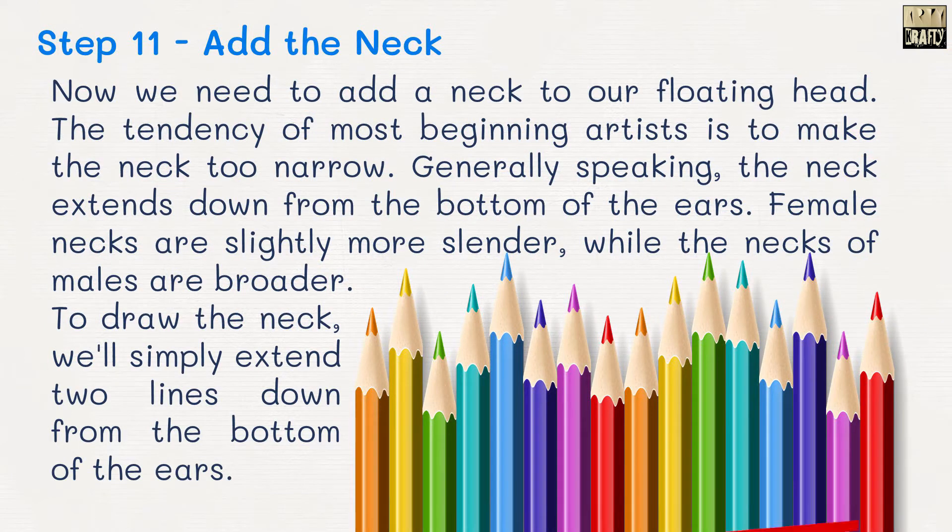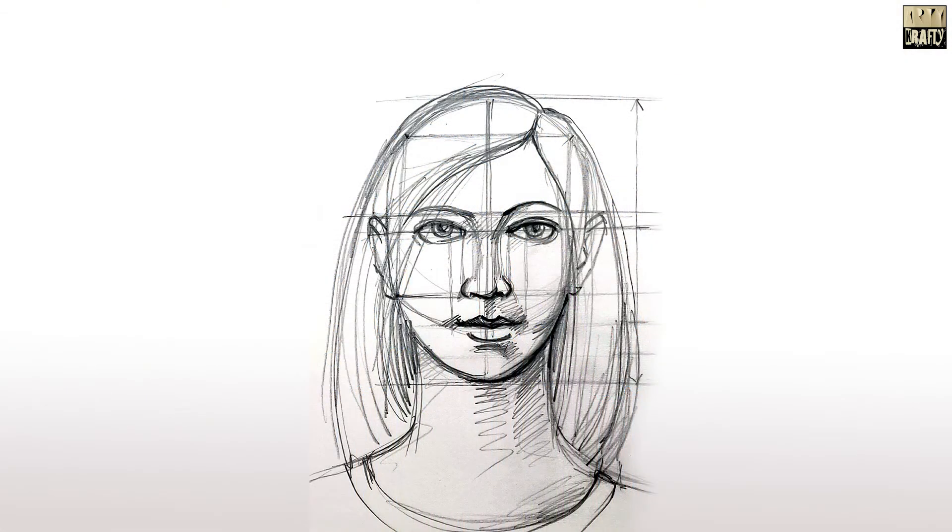Step 11. Then add the neck. Now we need to add neck to our floating head. The tendency of most beginning artists is to make the neck too narrow. Generally speaking, the neck extends down from the bottom of the ears. Female necks are slightly more slender while the necks of males are broader.